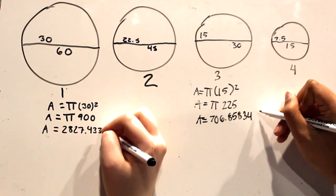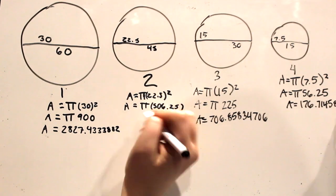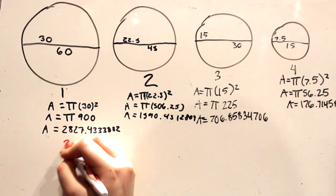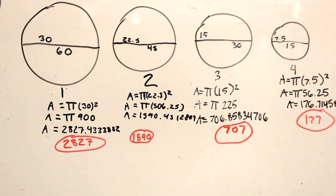Level 1 has a total area of 2,827 feet. Level 2 has a total area of 1,590 feet. Level 3 has a total area of 707 feet. Level 4 has a total area of 177 feet.